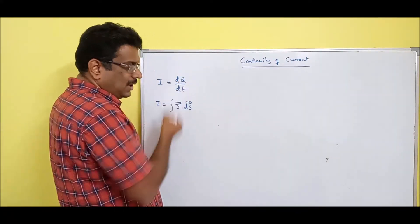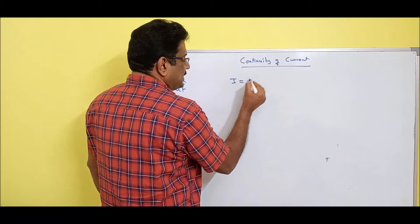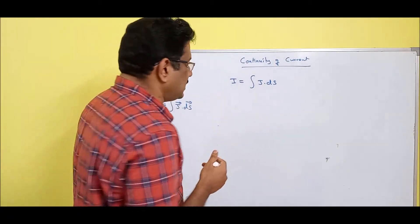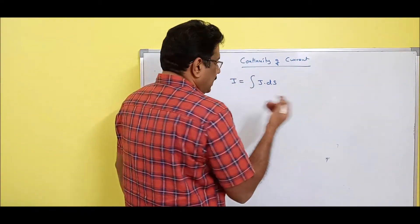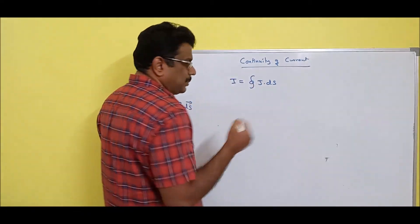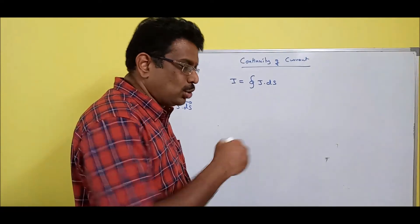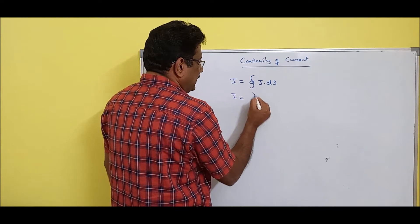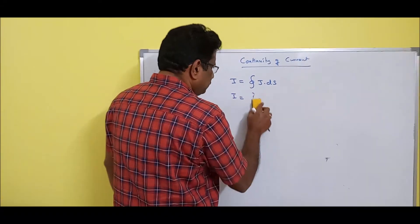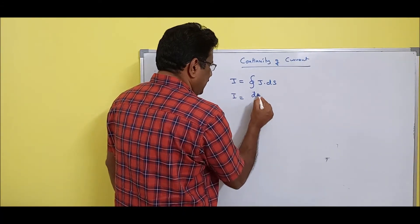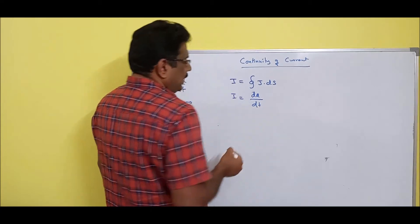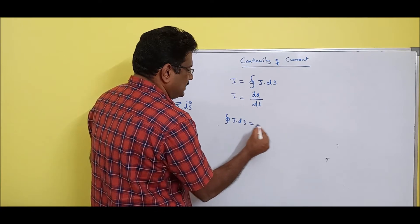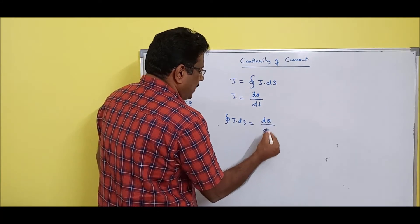From these two definitions, we know I is equal to the closed surface integral of J dot dS. Since it is a closed surface, no external area should be included. We also know I is equal to dQ by dT. By equating these two equations: the closed surface integral of J dot dS is equal to dQ by dT.